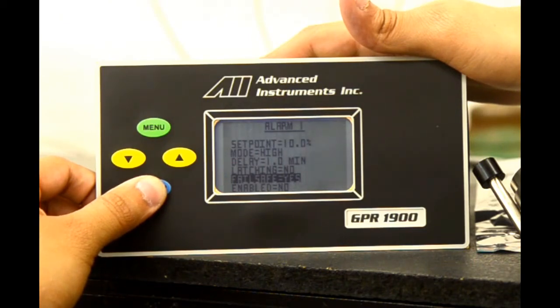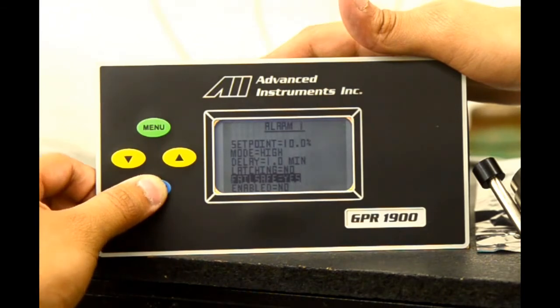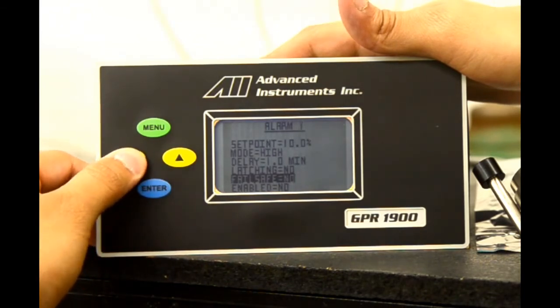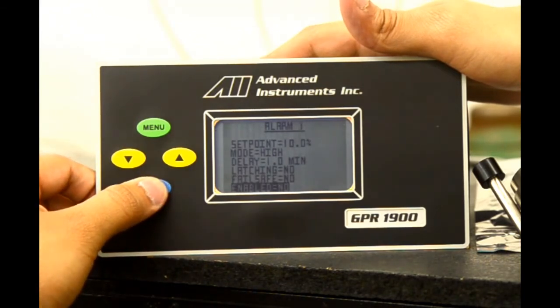And last, we have an enabled option. If we scroll down to the enabled option, it is currently on no. This disables alarm one, however, not alarm two. Again, enter to select to be enabled or disabled.